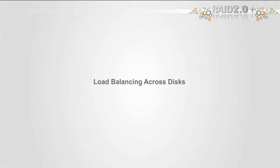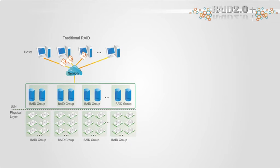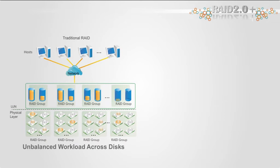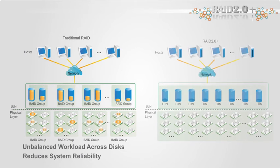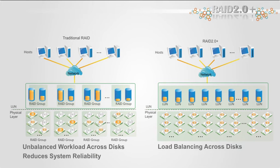Load balancing among disks. In a traditional RAID environment, the workload distribution across disks is unbalanced. Thus, disks with a heavier workload are more prone to failure, which reduces system reliability. By contrast, in a Huawei RAID 2.0 Plus environment, workload is evenly distributed across all disks. This significantly reduces the disk failure rate and improves overall system reliability.